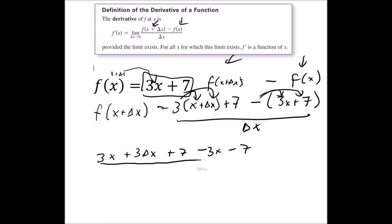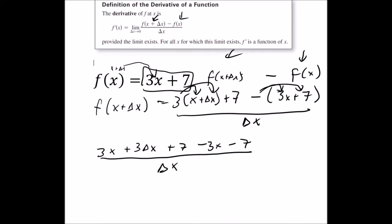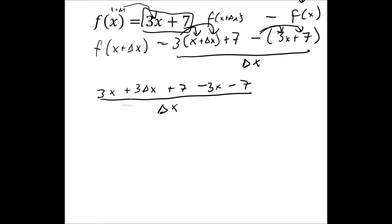All this divided by the change of x. We're now going to combine like terms. And if you notice, we have 3x and minus 3x cancel each other out, 7 and negative 7 cancel each other out. So we are just left with 3 change of x divided by a change of x.